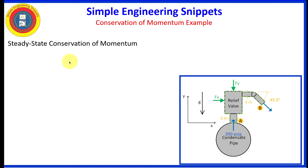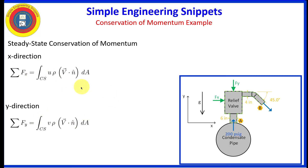Now let's get into conservation of momentum. We'll be using the Reynolds Transport Theorem at steady state, and we're going to be breaking it down into the x direction and the y direction. The sum of the external forces in the x direction is equal to the integral over the control surface of the x component of velocity times the density times the dot product of the velocity vector and the unit normal outward vector. A similar expression applies for the y direction.